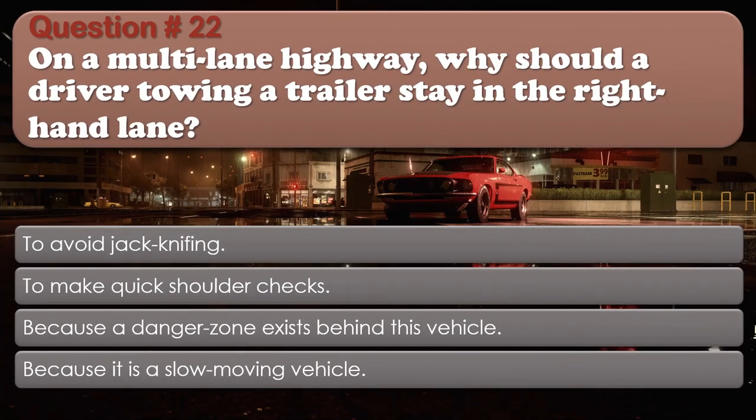Question number 22. On a multi-lane highway, why should a driver towing a trailer stay in the right-hand lane? To avoid jackknifing. To make quick shoulder checks. Because a danger zone exists behind this vehicle. Because it is a slow-moving vehicle. The correct answer is: Because it is a slow-moving vehicle.